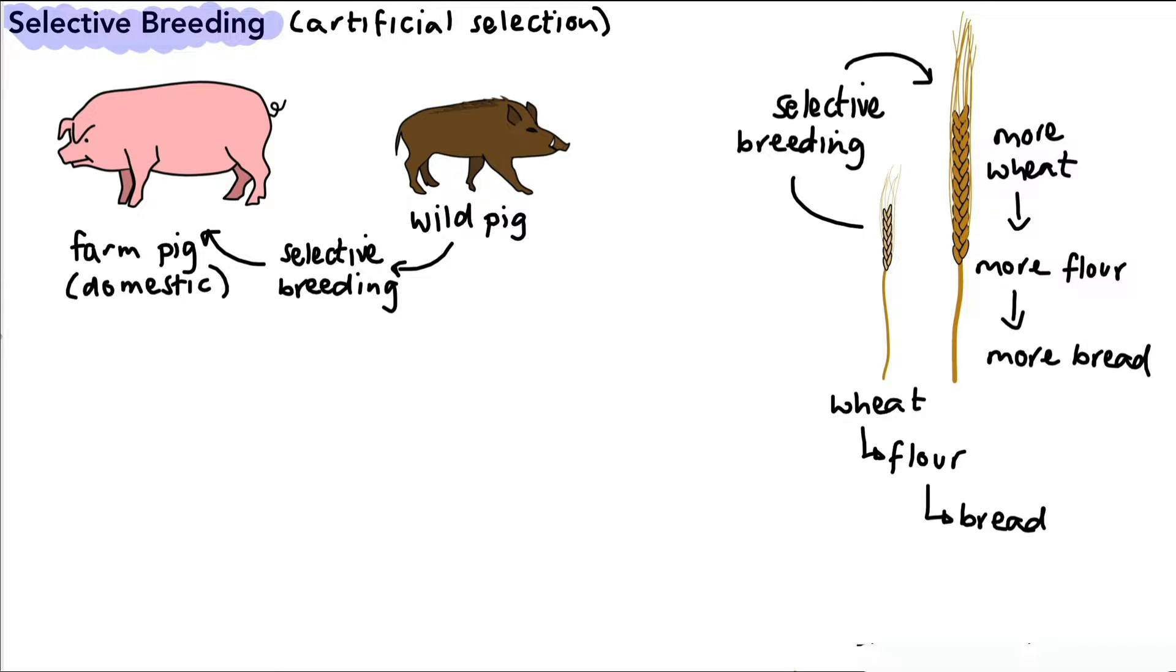Okay, so this is not the only reason we do selective breeding. There's a whole bunch of reasons, but these are two key ones. There are four other reasons that we're going to look at which you should know and remember, and those are as follows.